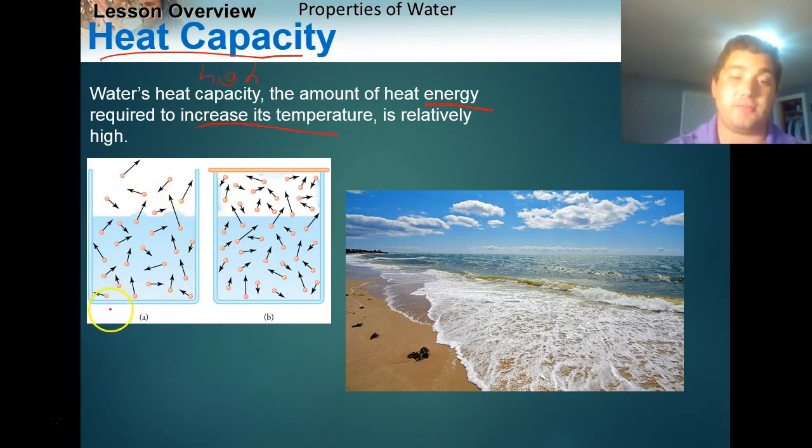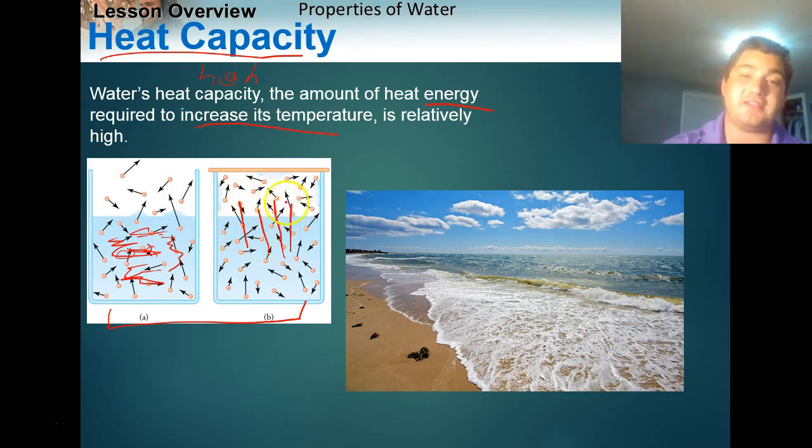And again, this is due to that polarity and those hydrogen bonds that form between water molecules. And this is a little picture representation of water right before it's boiling. So for water to boil, these little water molecules in here start moving around really fast. They're bouncing around everywhere. And then eventually, once you get to boiling, 100 degrees Celsius, they're moving around so fast that these water molecules will basically leave and become airborne.